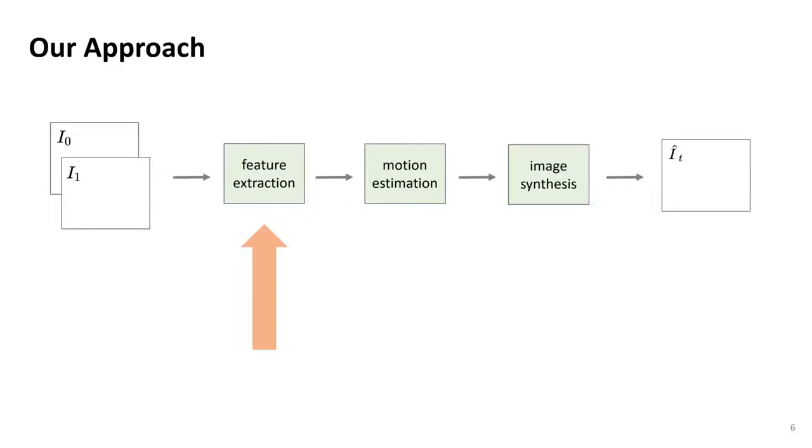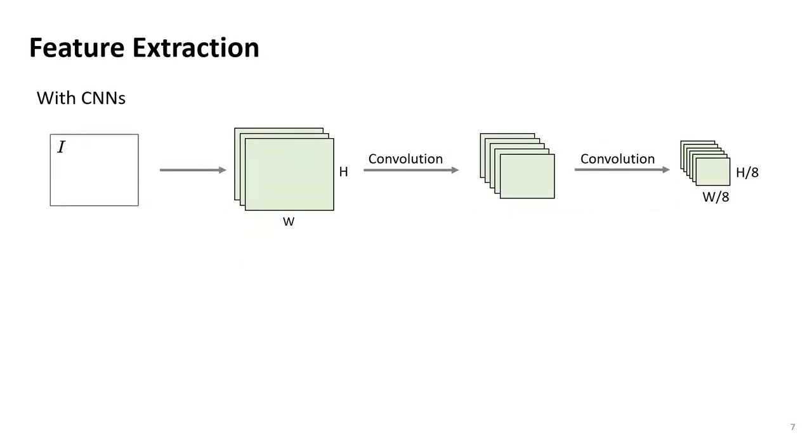We start with our main contribution, the efficient feature extraction. A common method for feature extraction is to pass an image through several convolutional layers to obtain a compressed feature representation. The dimensionality can be reduced, for example, with strided convolutions.